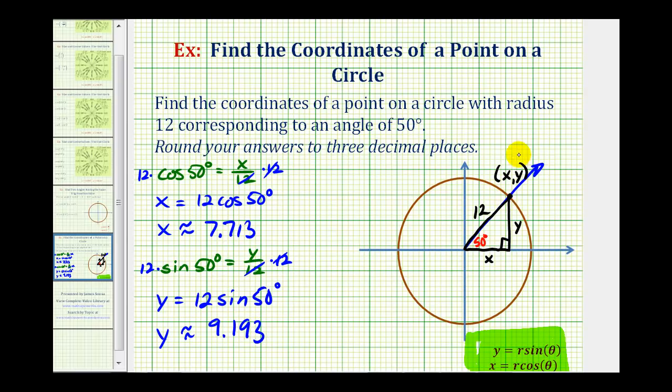So we'll go ahead and give this point here as an ordered pair. It would be 7.713 comma 9.193.